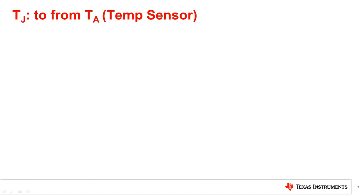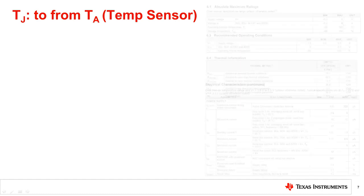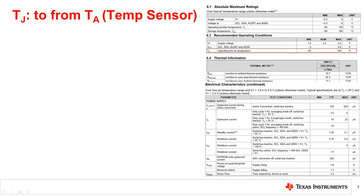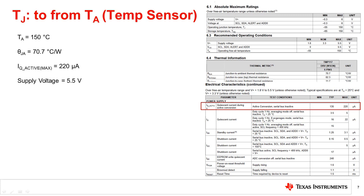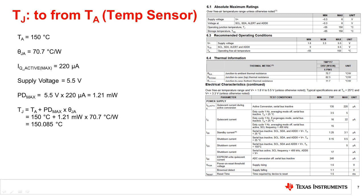Let's take another example for the same device. The ambient temperature is 150 degrees Celsius max. The thermal resistance from junction to air is 70.7 degrees Celsius per watt. The maximum active current specified is 220 microamps, and we will assume a supply voltage of 5.5 volts. All of the parameters are within the recommended operating conditions. The maximum power dissipation can now be calculated as PD max, and the corresponding junction temperature can be calculated as 150.085 degrees Celsius.